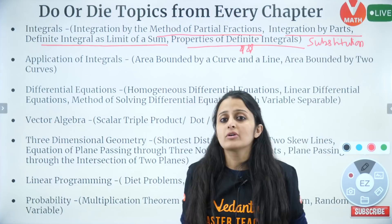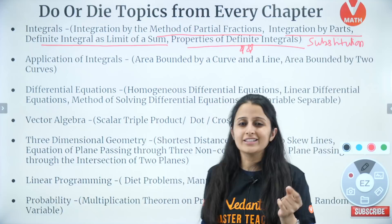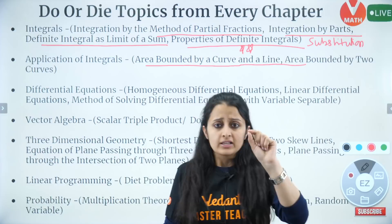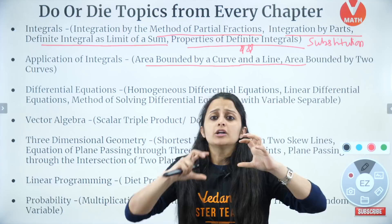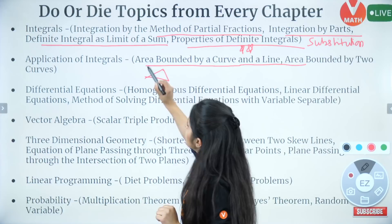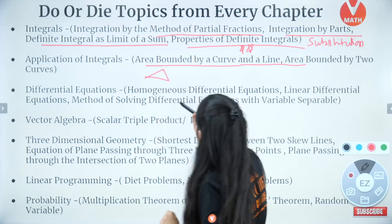I have been correcting board papers for over 10 years so I know this well. For application of integrals, the area bounded by a curve and a line is the key topic — parabola and line, circle and a line, two circles, or sometimes inequality-based or three vertices using area under the curve. All of this is very important.